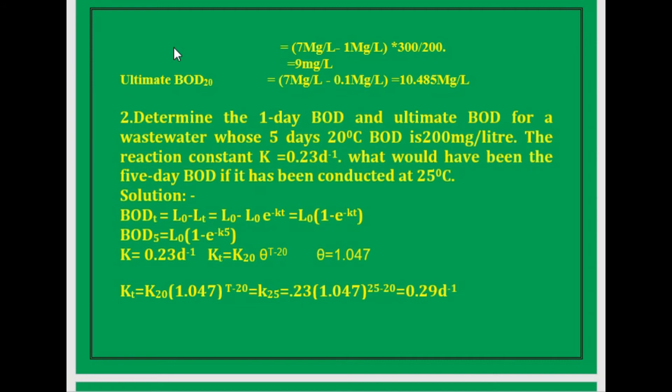Now applying the same calculation to find the ultimate BOD — that is BOD for 20 days, when the DO has stabilized. The initial DO is 7 mg/L and after 20 days it is 0.1 mg/L. Applying these values in the formula: (7 mg/L minus 0.1 mg/L) multiplied by the dilution factor. After calculation the answer is 10.485 mg/L.